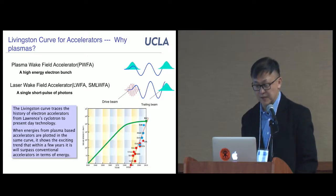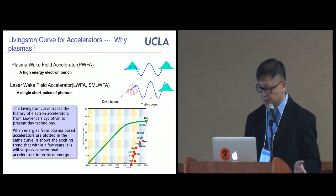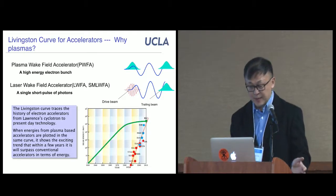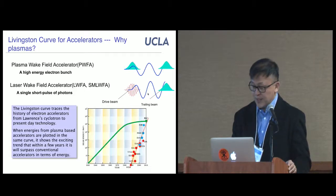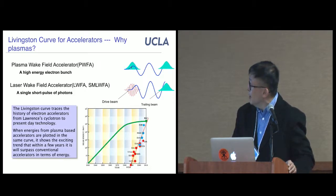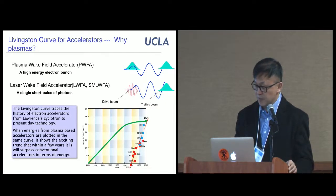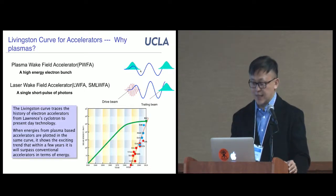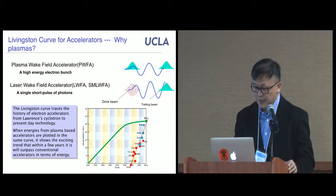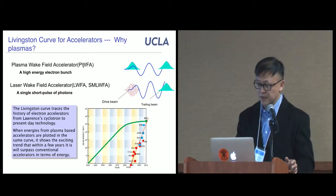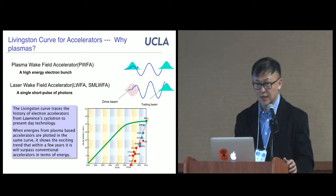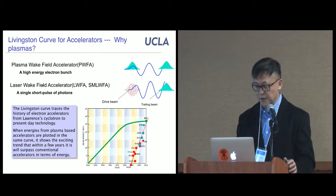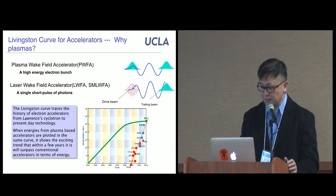The first problem I want to talk about is plasma-based accelerators. A plasma-based accelerator usually consists of three parts: a driving bunch, which loses its energy to produce plasma waves; a trailing bunch, which picks up energy from the plasma waves and accelerates; and the plasma, which acts as the go-between. There are two main types: PWFA, or plasma wake-field accelerators, which use an electron beam as the driver; and LWFA, or laser wake-field accelerators, which use a laser as the driving force.